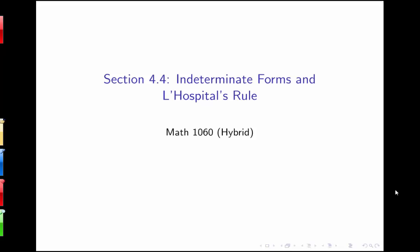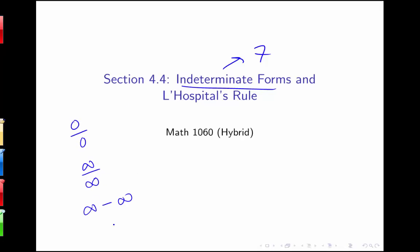In this lecture, I'm going to be talking a little bit more about indeterminate forms and L'Hôpital's rule. Let's just review that we have seven different indeterminate forms: 0 over 0, infinity over infinity, infinity minus infinity, 0 times infinity, and three different power indeterminate forms — 0 to the 0, infinity to the 0, and 1 to the infinity.